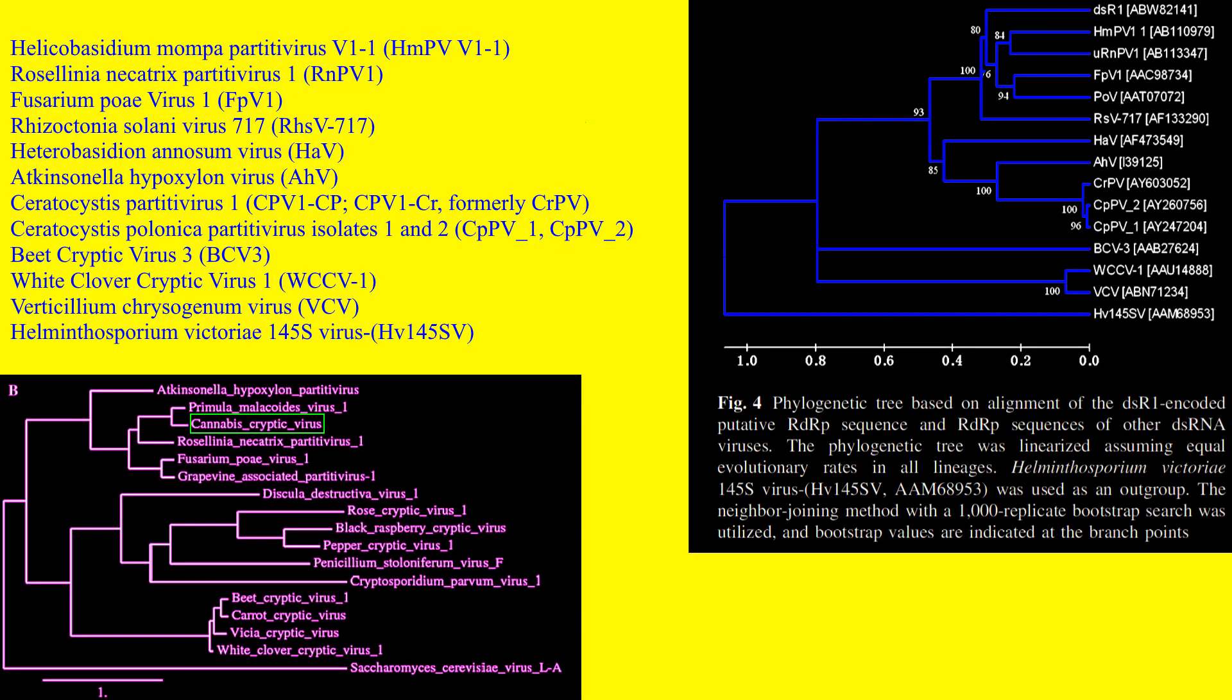Primula malacoides virus 1 is known to infect fairy primula and was found to be strongly related to cannabis cryptic virus. PMV-1 itself is related to members of the genus partitivirus.